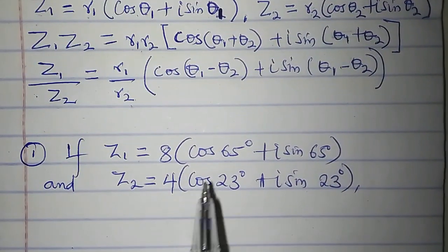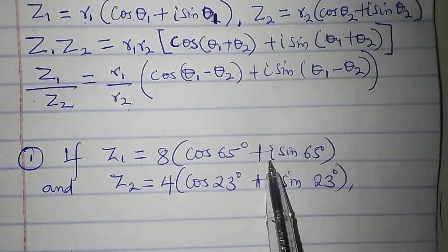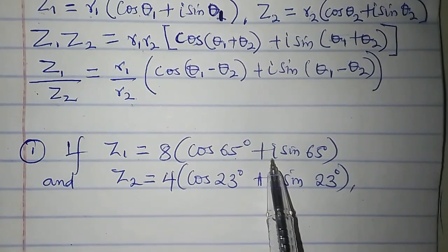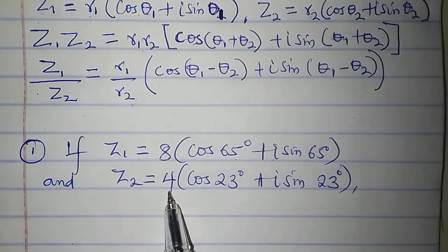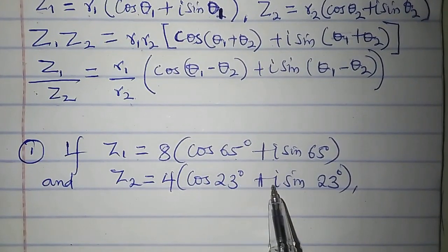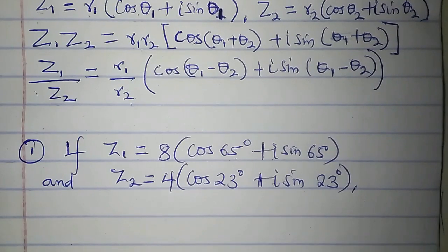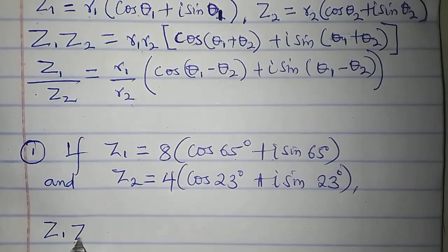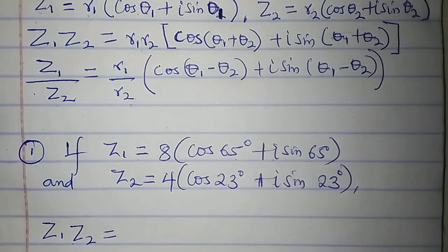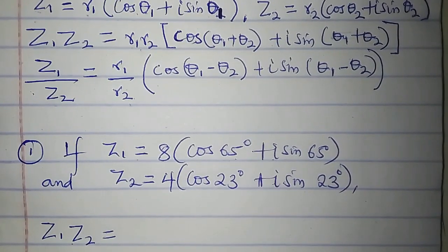If z1 is equal to 8(cos 65° + i sin 65°) and z2 is equal to 4(cos 23° + i sin 23°), I want to determine z1 times z2 in polar form. Of course these two complex numbers are in polar form.